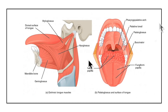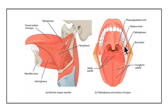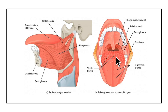The four extrinsic muscles of the tongue are the genioglossus, hyoglossus, styloglossus, and palatoglossus muscles. The palatoglossus originates from the oral surface of the palatine aponeurosis and descends in the palatoglossal arch to the side of the tongue at the junction of the oral and pharyngeal parts. Its action is to pull up the root of the tongue, approximate the palatoglossal arches, and close the oropharyngeal isthmus.